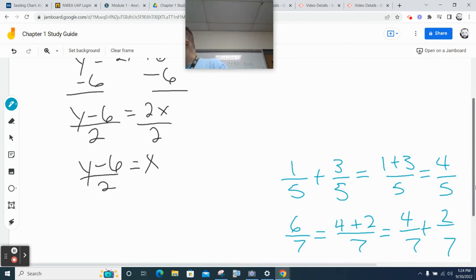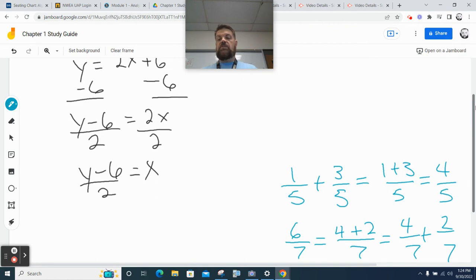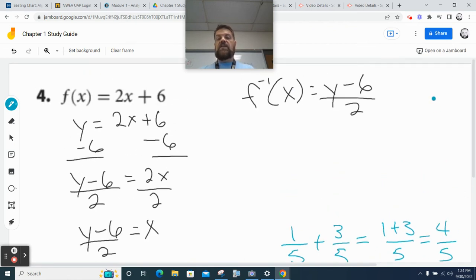So what your textbook likes to do in this particular case, and I think that's why there's some confusion on these problems. This could be written as y over 2 minus 6 over 2, which would be y over 2. What's 6 divided by 2? 3. So your textbook has this as the answer.